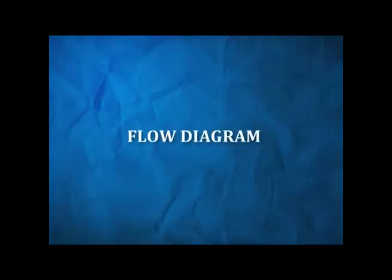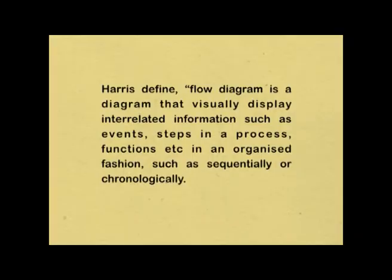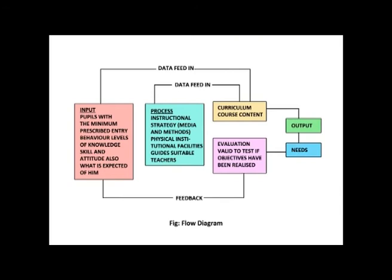Now, flow diagram. A flow diagram is a collective term for a diagram representing a flow or a set of dynamic relationships in a system. It is used to structure or order a complex system, or to reveal the underlying structure of the elements and their interaction. A flow diagram is a diagram that visually displays interrelated information such as events, steps in a process, functions etc. in an organized fashion, such as sequentially or chronologically. Planning is fundamental for systemization. A system can be represented by drawing a map called a flow diagram. The relationship between the input, instructional strategies and the output are shown by means of a simple flow diagram.